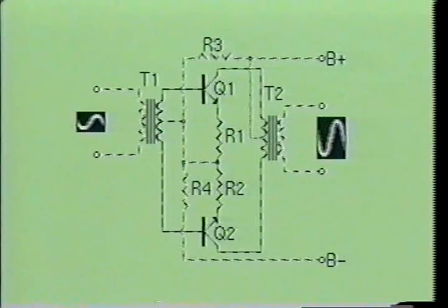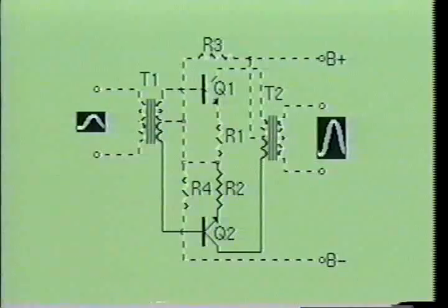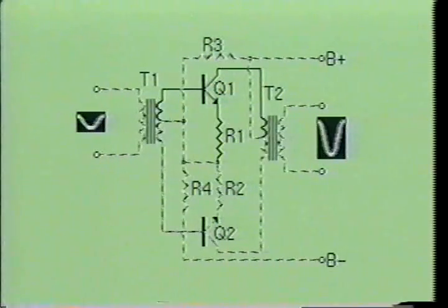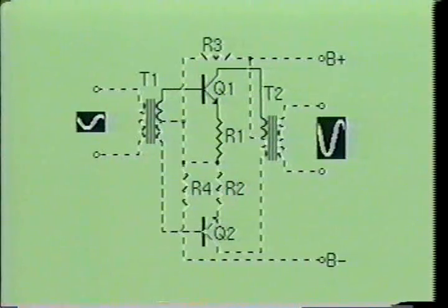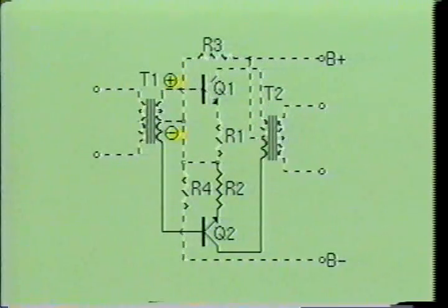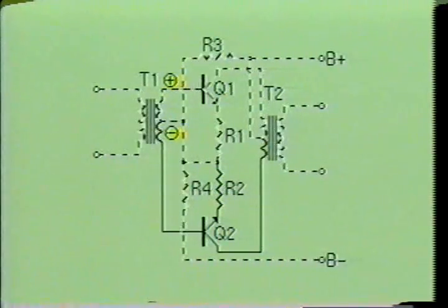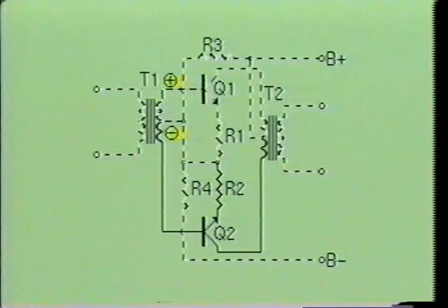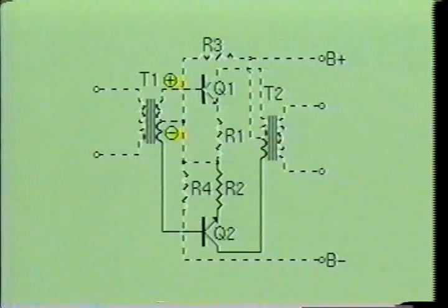When the current through one transistor increases, the current through the other transistor will decrease. The increasing magnetic field produced in one half of the output transformer is aided by the decreasing magnetic field produced in the other half, giving the effect of one transistor pushing while the other is pulling. When the top of the secondary on T1 is positive with respect to the bottom, the signal current flows from the center tap winding into the junction of R3 and R4. Q1 is forward biased and Q2 is reverse biased, so current flows through R1 and into the emitter-base junction of Q1. A small percentage flows through the base area back to the top of the secondary of T1, while the remainder flows through the collector of Q1 and into the top of the primary of T2, then from the center tap back to B+.